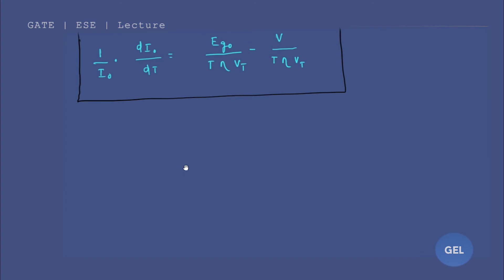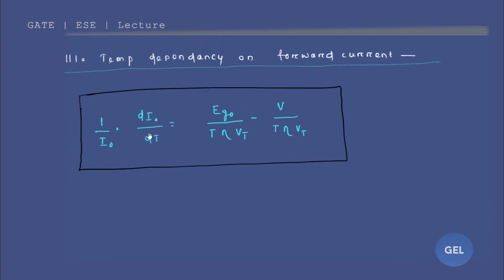Moving to our last point — temperature dependency on forward current. How your forward current gets affected with a change in temperature. Please remember this formula: EG0 by T times eta times VT, minus V by T times eta times VT. That means this formula is nothing but EG0 minus V, divided by T times eta times VT. Always remember it in this way.